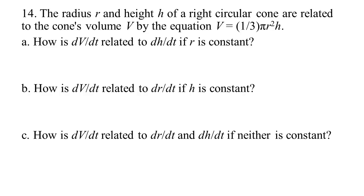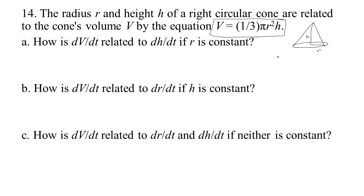Here are some examples of related rates problems that are a little bit more applied. We have a problem talking about a cone, and we know that the volume of a cone is (1/3)πr²h. We have a cone here where h is the height and r is the radius. If you change the radius or change the height, the volume adjusts accordingly, and you can find the relationship between the rates of change of those quantities.